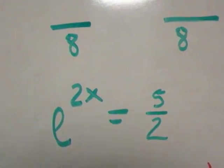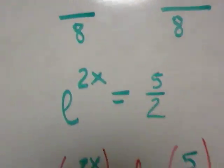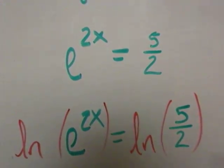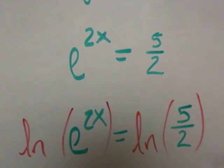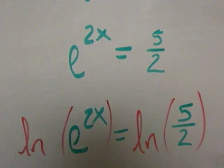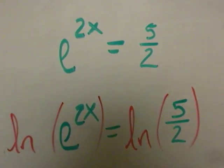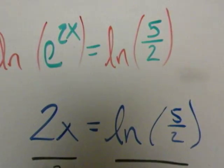So remember, to get rid of e, I'm going to apply the natural log to both sides of my equation. When I do that, the natural log and the e, which are inverses of each other, disappear on the left-hand side, and that 2x as a power drops down to be just a normal 2x.